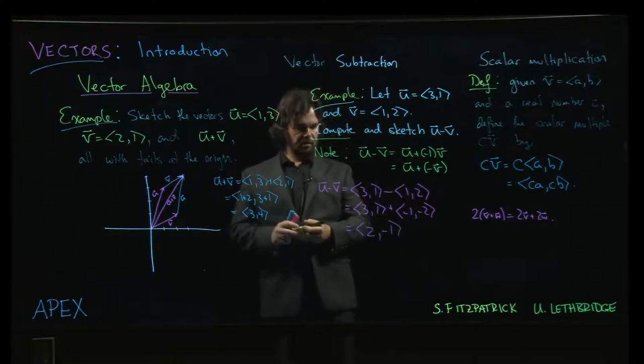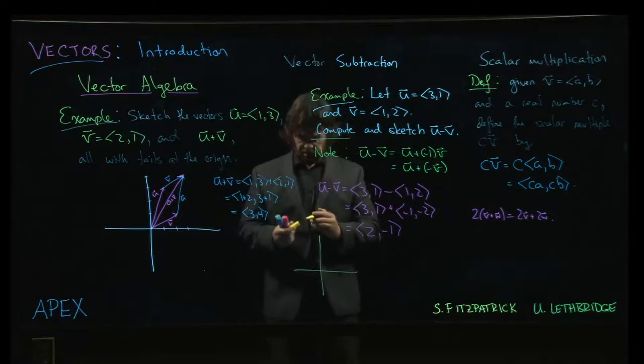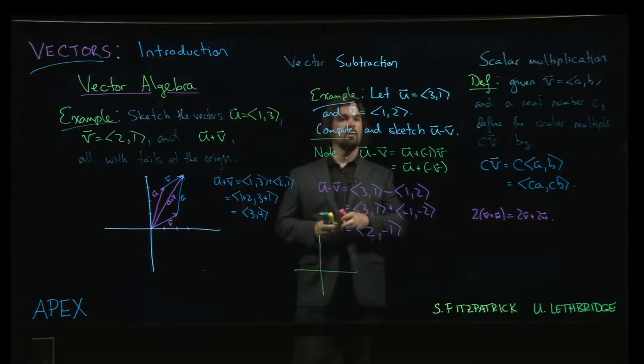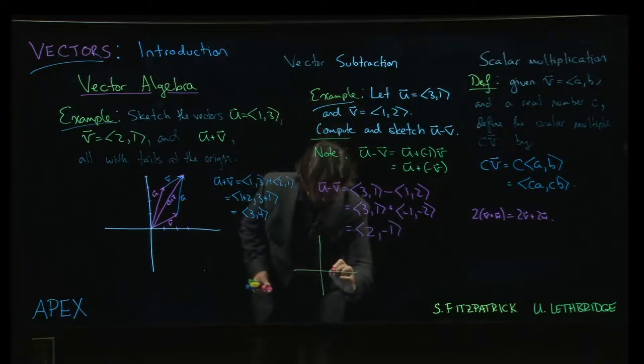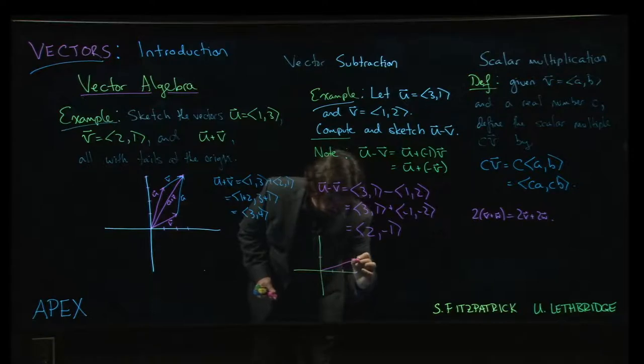And if I wanted to sketch these vectors, actually there's sort of an interesting thing that happens when we sketch them. So first the vector u, 3, 1, so let's go 1, 2, 3, up 1, over there. So there's u.